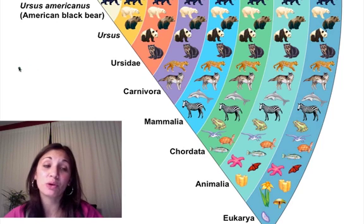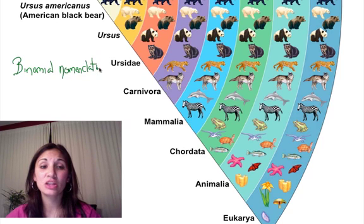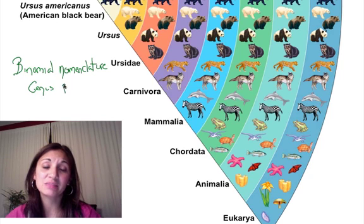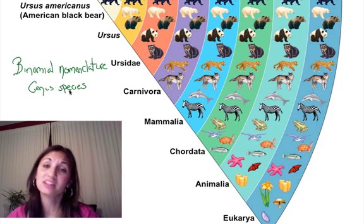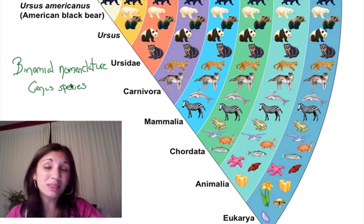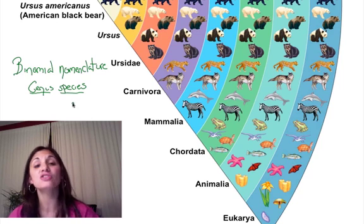This process by which we name different organisms was developed by Carlos Linnaeus and is called Binomial Nomenclature — literally the two-name naming system. It gives every organism a unique genus and species name, so that by the time you get to this level, you're speaking about just a single type of organism. This is really useful for scientists and laypeople all over the world, so that when we're talking about a type of organism, no matter what language we speak or where we're from, we know we're speaking about the same thing. Genus is always capitalized, species is always lowercase, and if they're not in italics, you must underline a genus and species name in binomial nomenclature.